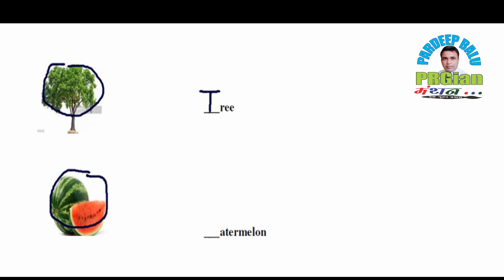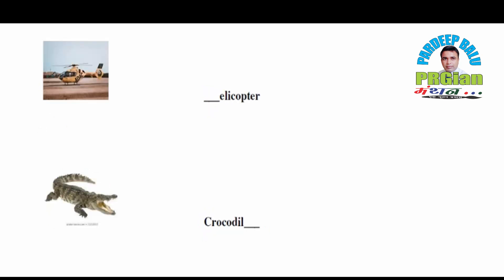Now here what is given? Watermelon. So what will the spelling be? W A T E R M E L O N — Watermelon. Let's see what is next. Helicopter — whose picture is this? Helicopter. So what will come here? H E L I C O P T E R — Helicopter.